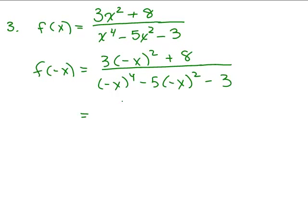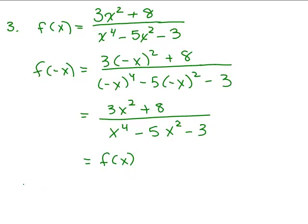So we're plugging in negative x for every value. Every time we see an x, we're plugging in a negative x. So when you square this negative x, we get 3x squared over x to the 4th minus 5. Now, this negative x squared is also an x squared. Is it the same function? Yes, it is. Nice not to have a tricky one. So this is an even function and it's symmetric with the y axis.